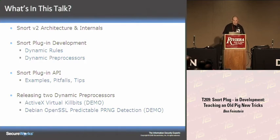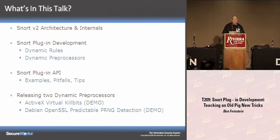The first preprocessor deals with ActiveX controls — essentially a virtual kill bit. The other preprocessor deals with SSH Diffie-Hellman key exchange that is affected by the Debian OpenSSL random number generator bug.